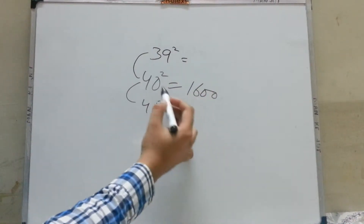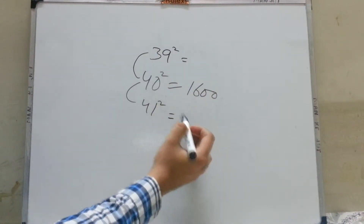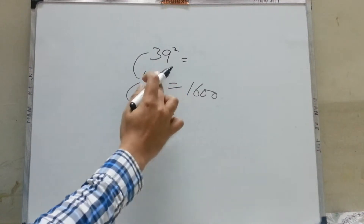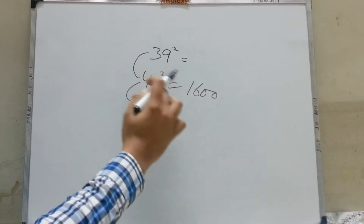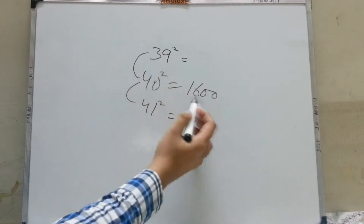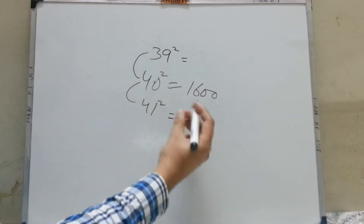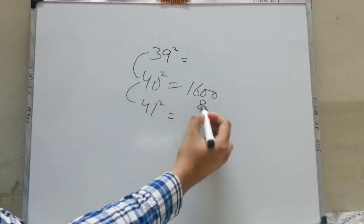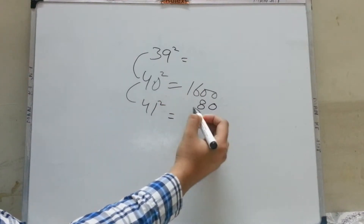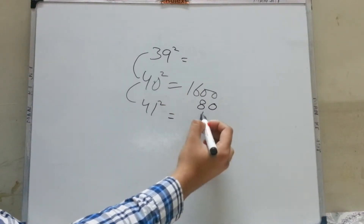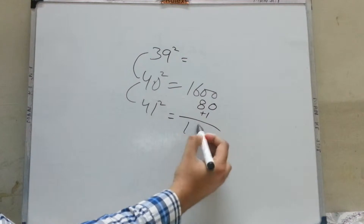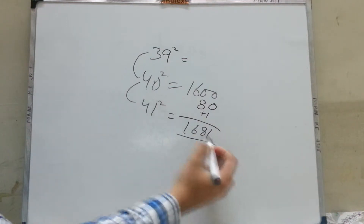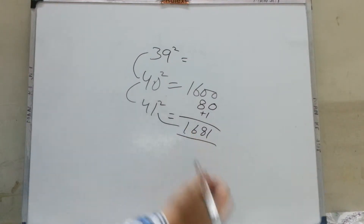To calculate the square of 41, you have to add 40 two times to 1600. So you add 40 twice, that means you will add 80 plus 1. Your answer will be 1681, which is the square of 41.